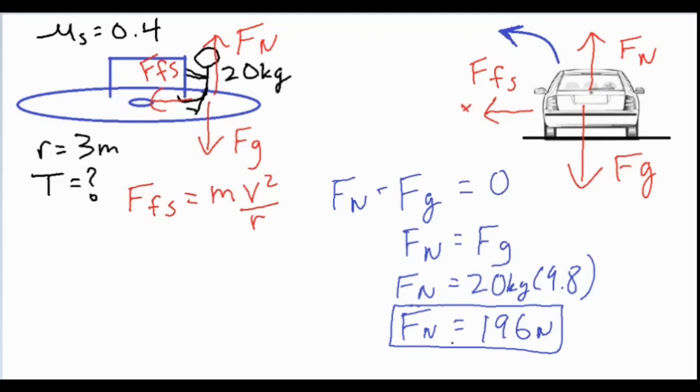Now that will typically be pretty significant because the force of friction is mu times normal force, so that is mu times normal force equals m v squared over r. Now I know that if I'm going to solve for T, then I'm going to have to do a substitution and I know that the velocity equals 2πr over T.